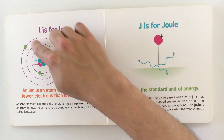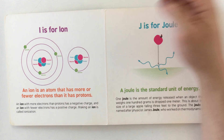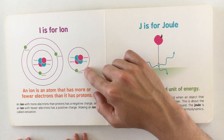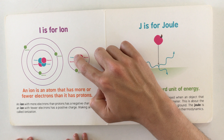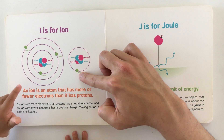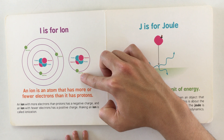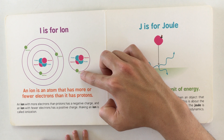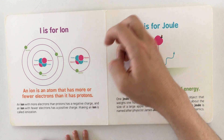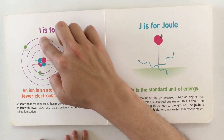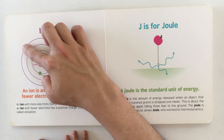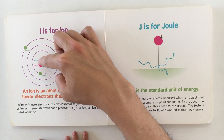This one has two protons and one electron, so it has fewer electrons — it's a positively charged ion. And this one is a negatively charged ion because it has three electrons, which is more than two protons.